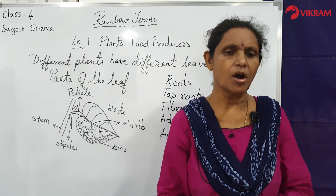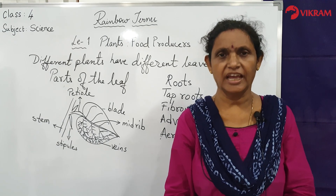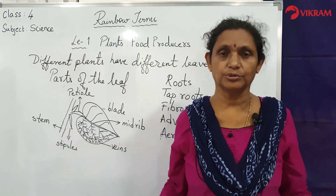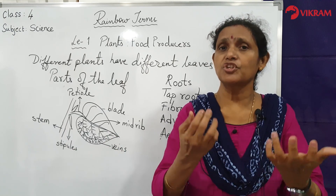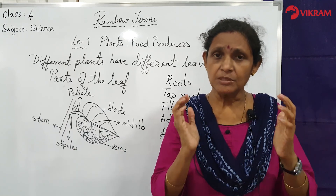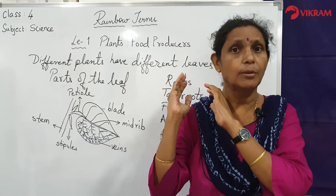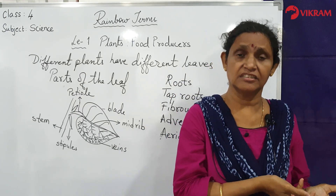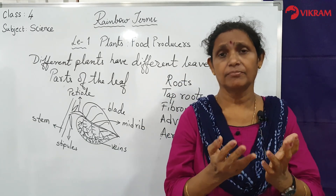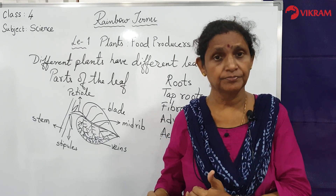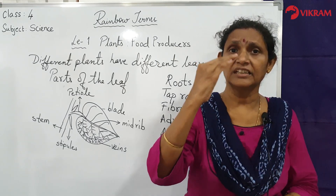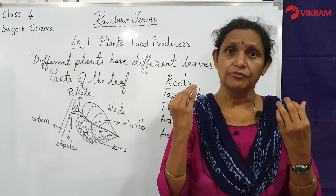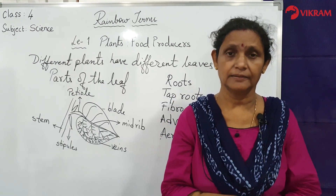The mango, guava, banana, jamun, and papaya are also planted around the house — these are trees that give you fruits. The food prepared by the plant is stored in the form of fruits, flowers, seeds, stem, leaves, and roots. So you are eating different parts of the plant in which food has been prepared and stored.